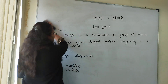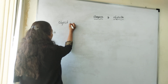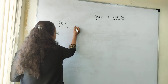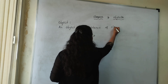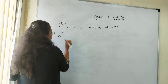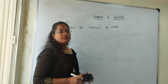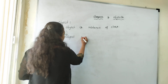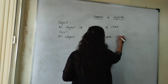Let us see the definition of an object. So what is an object? An object is an instance of a class. Or we have another definition: an object which can exist physically in the real world. A class does not exist physically in the real world, but an object can exist physically in the real world.